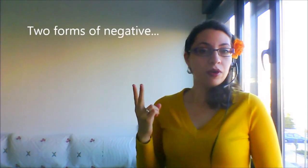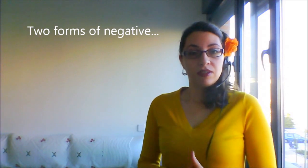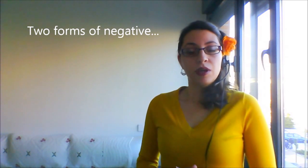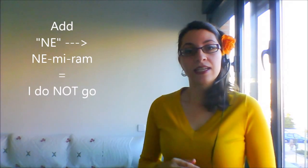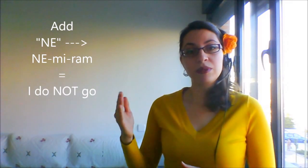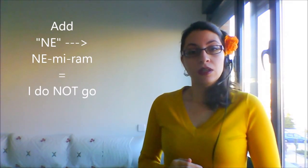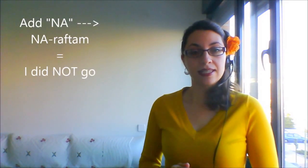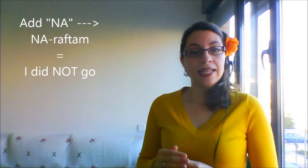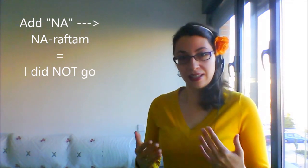We have two forms of negative in Farsi. We can make a verb negative by either adding 'ne', as in 'ne miram' — I don't go — or by adding 'na', as in 'na raftam' — in the past, I didn't go.